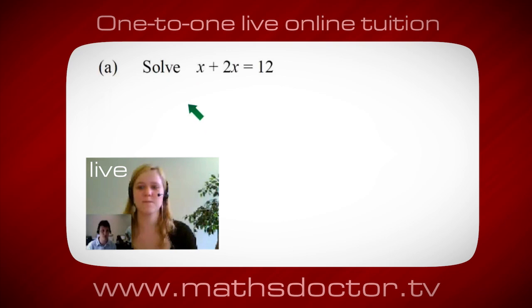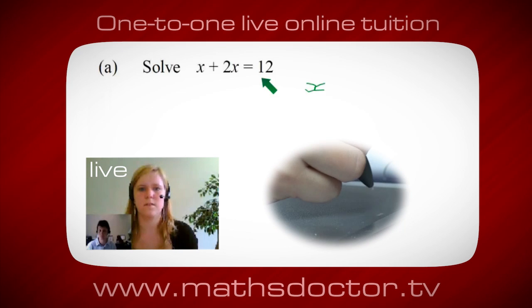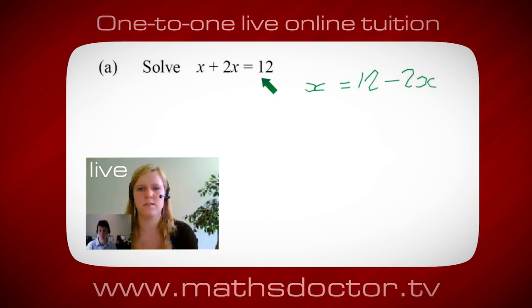Okay, Marie. So let's have a look at this one. Solve x plus 2x equals 12. So what do you think you'd do first? Well, I want x on its own. So I would put x equals 12 minus 2x.